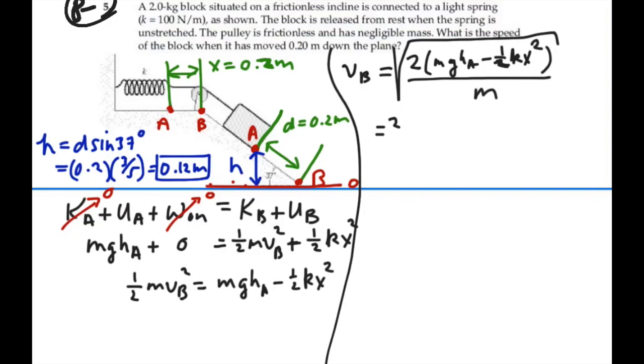Our mass was 2 kilograms. g is 9.8, h is 0.12, minus 1/2 times k which is 100, x is 0.2 squared, all this over the mass which is 2 kilograms, all this square root.